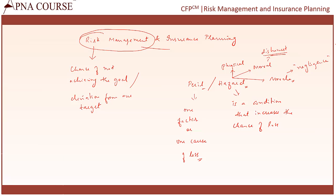Moving on — now we know that peril and hazard lead to risk, and we know that risk is the chance of not achieving the goal or the chance of deviation from our target. Now, what is risk management? That is going to be our next set of discussion.